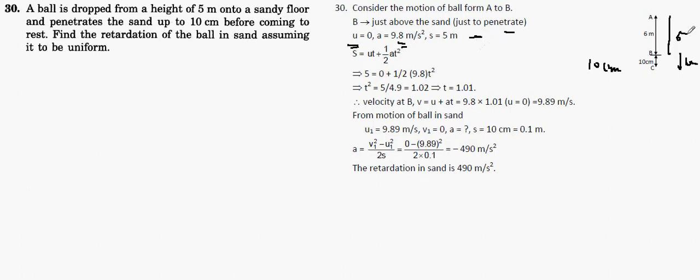So here it will be 5 meters only. We'll use the formula s = ut + ½at². Put the values: s is 5, initial velocity 0, a is 9.8, and we'll find the time to reach from A to B. The distance traveled is 5 meters, which gives time t = 1.01 seconds.